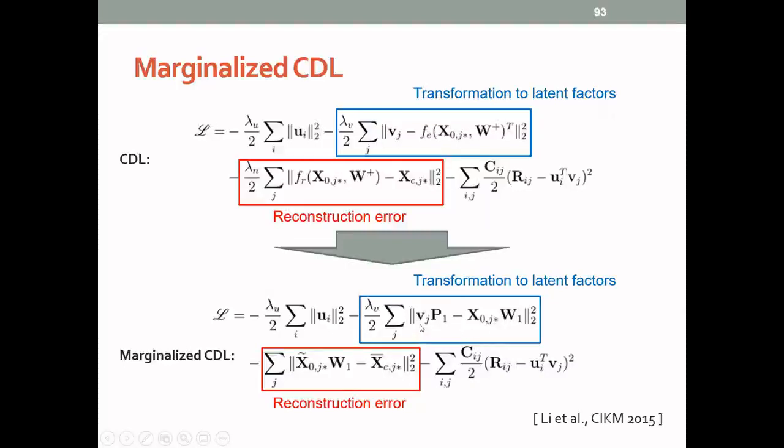So correspondingly, the Vj here needs to be multiplied by a matrix P1 in order to go from the latent space to the content space. And here corresponds to the original reconstruction error. So in the original reconstruction error term, we have this clean content. This is the clean version of the document.